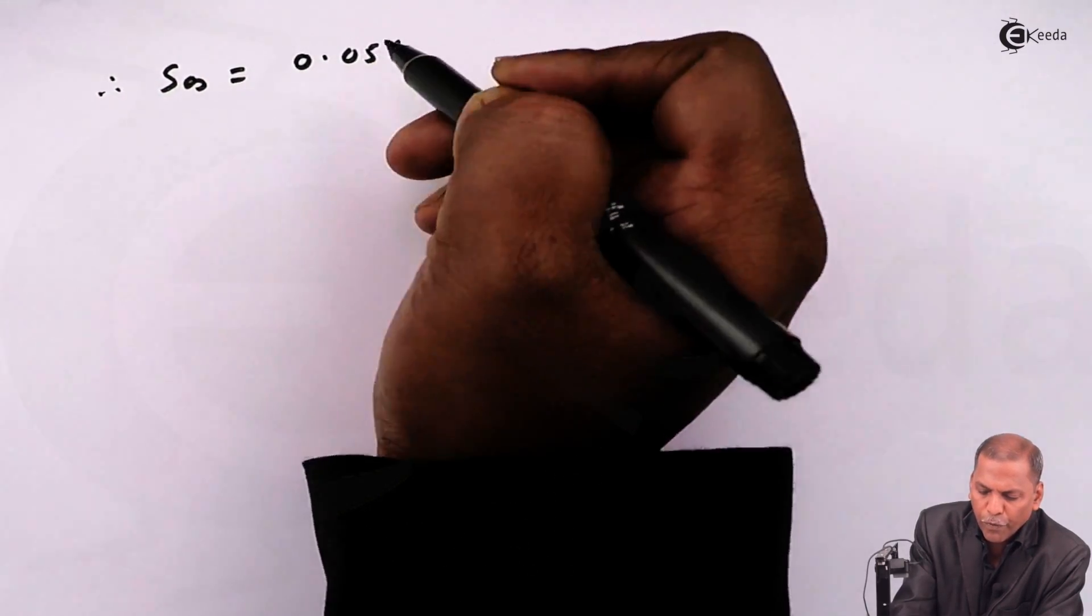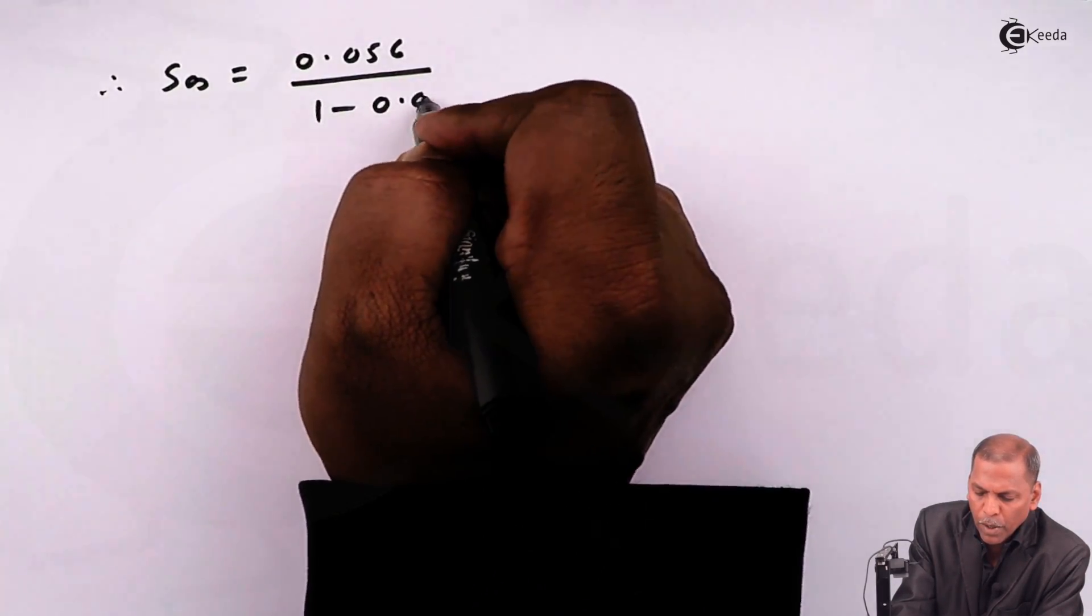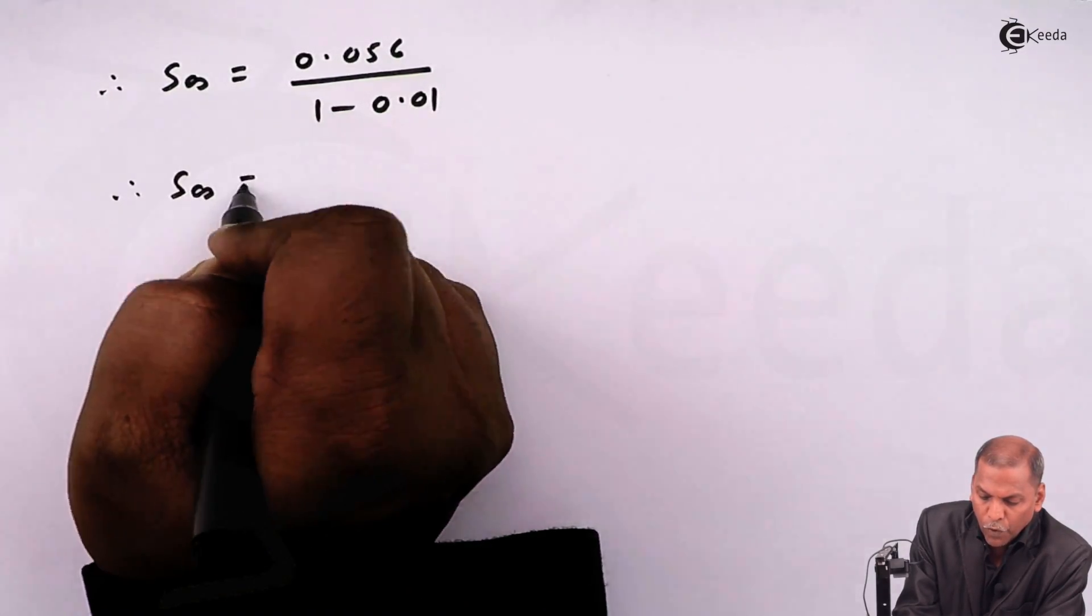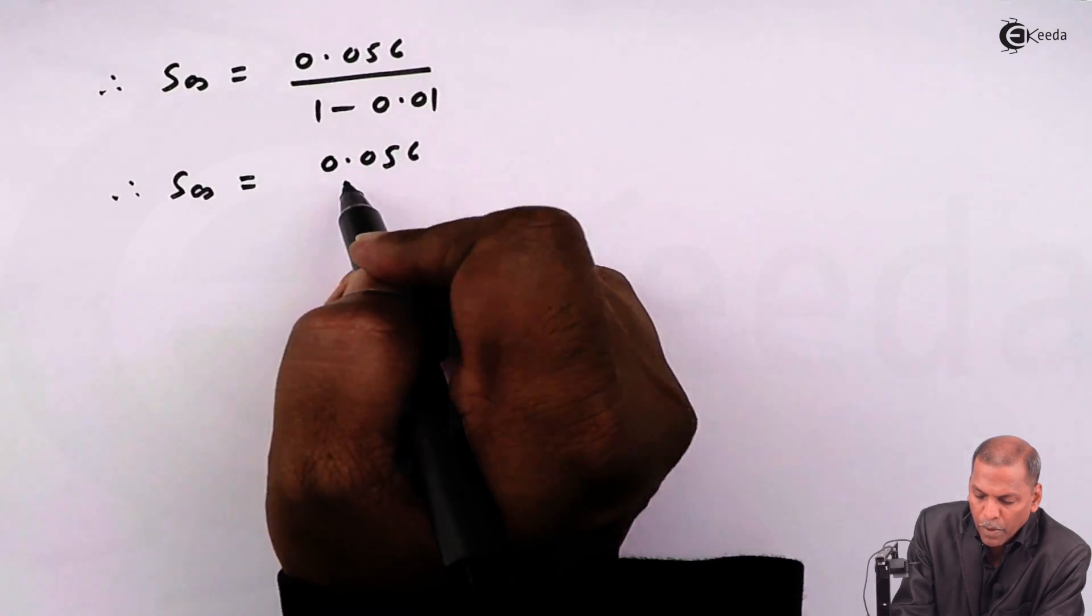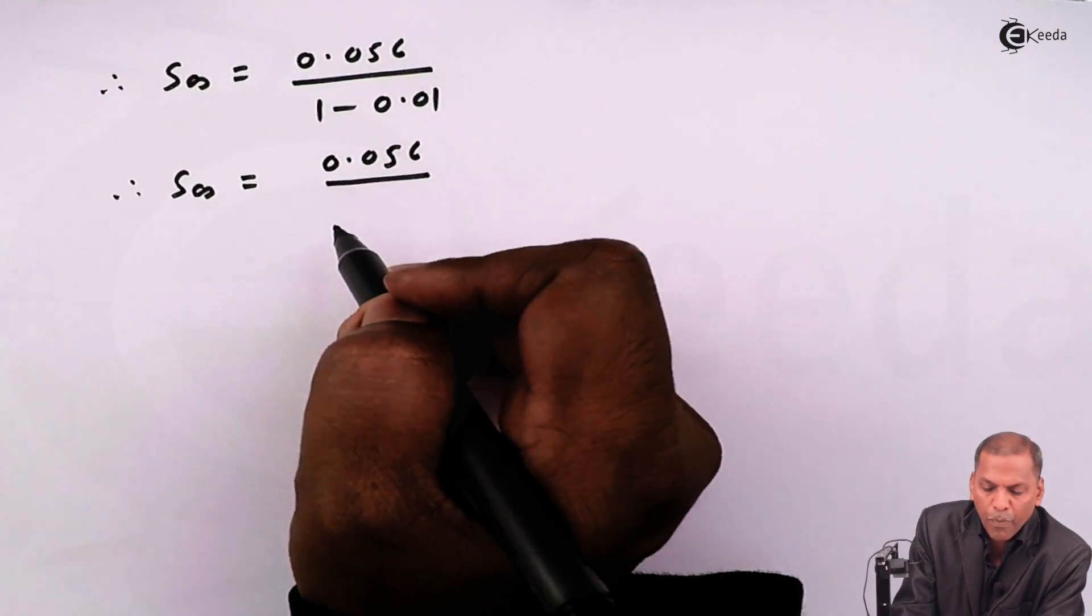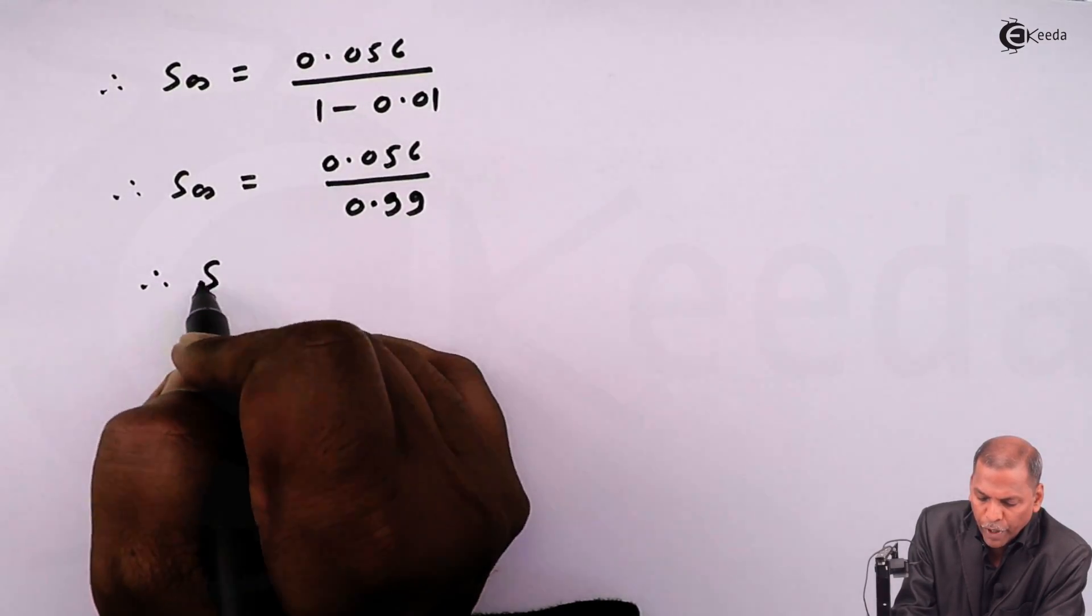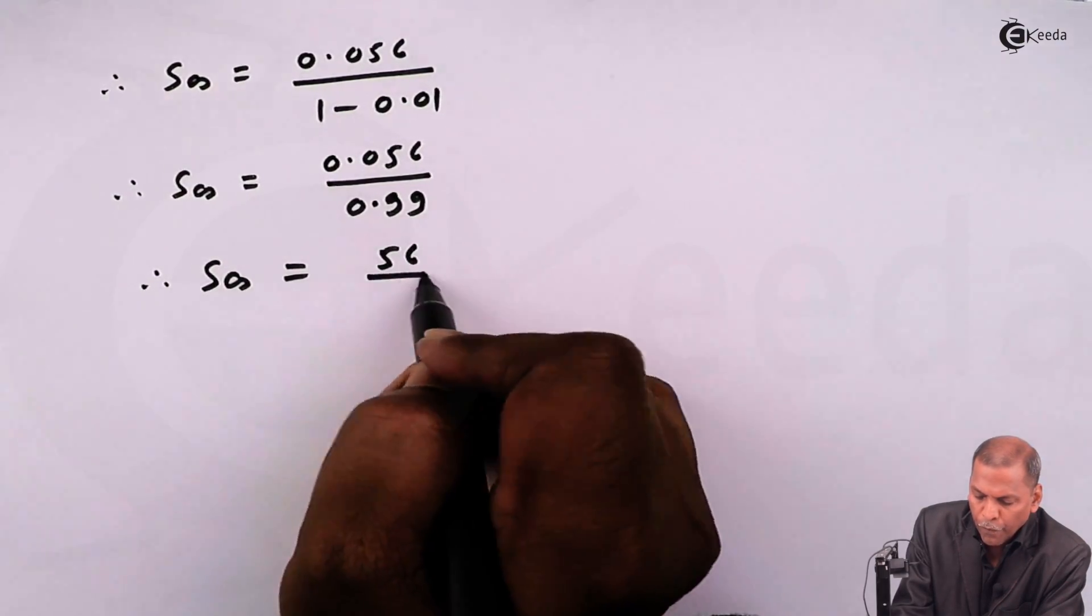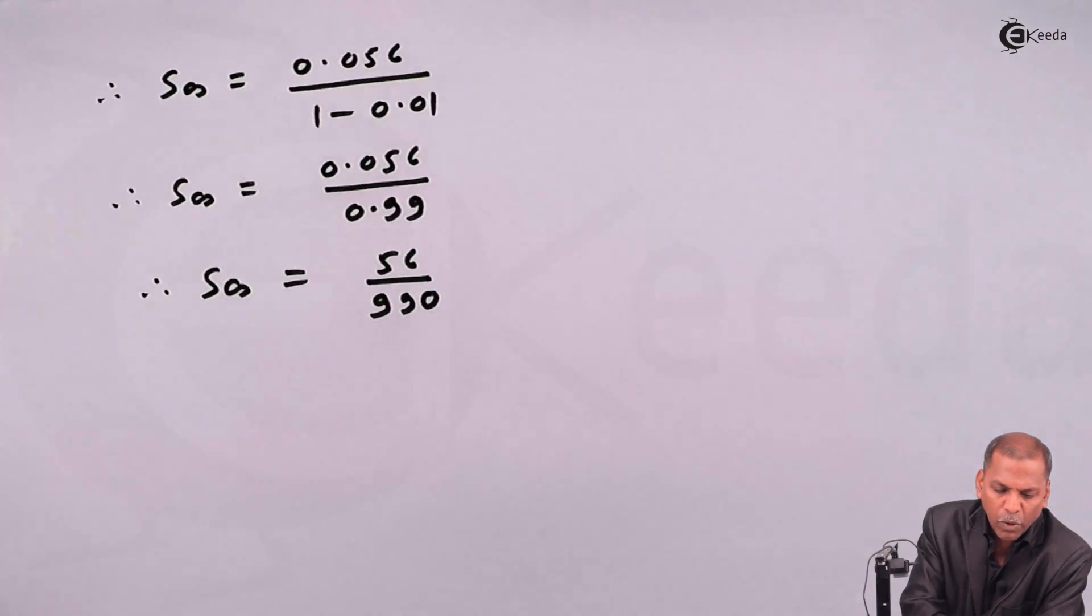Therefore the s infinity is equal to 0.056 upon 1 minus 0.01, therefore s infinity is equal to 0.056 upon 0.99, which also can be written as 56 upon 990.